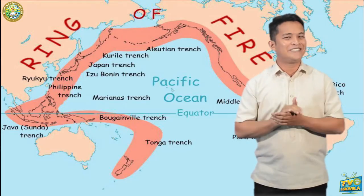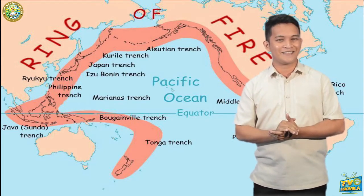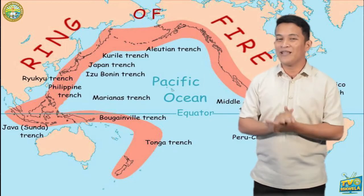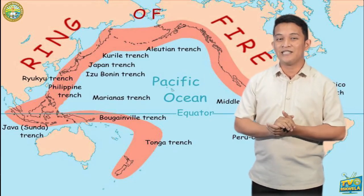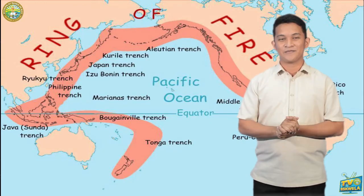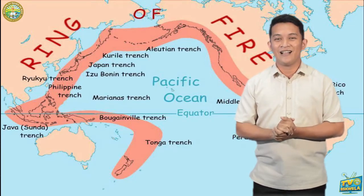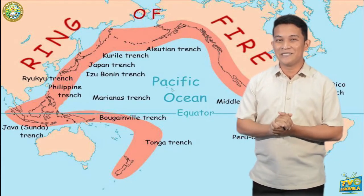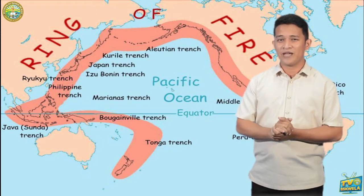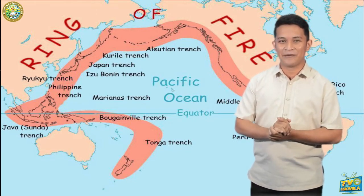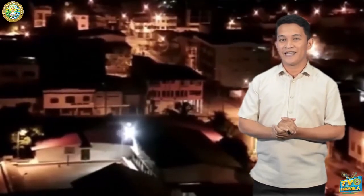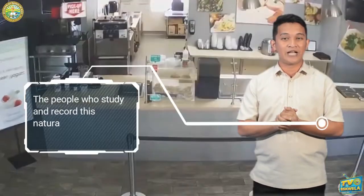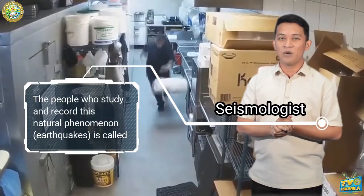That's why we have a lot of earthquakes! As you can see in the picture, the red line represents the active volcanoes that surround the Pacific Ocean. People who live along this area, like us Filipinos, must anticipate the occurrence of earthquakes because it can happen anytime. Strong earthquakes have caused countless deaths all over the world, even before people started recording these events. The people who study and record this natural phenomenon are called seismologists.